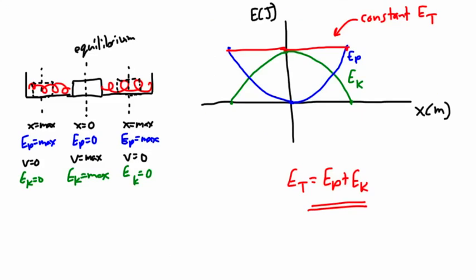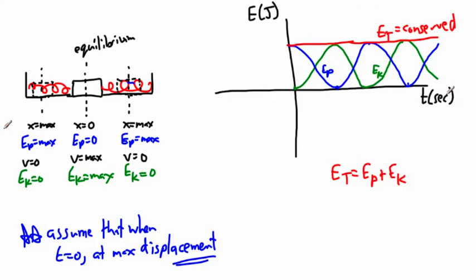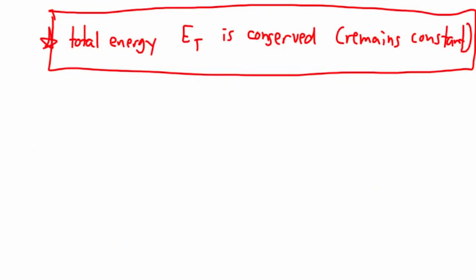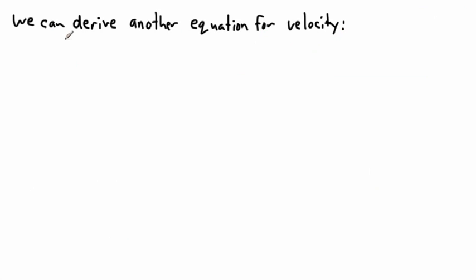From there we were able to do graphs of energy versus position, or displacement in this case, or energy versus time. And we saw that the total energy is conserved. But what I'd like to do now is show you how to derive another equation for velocity.